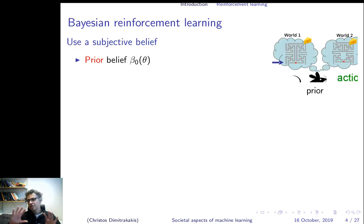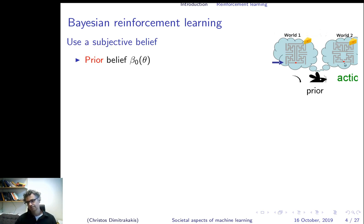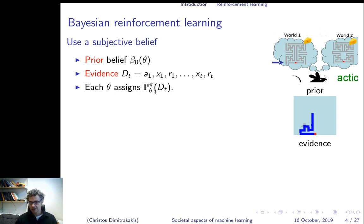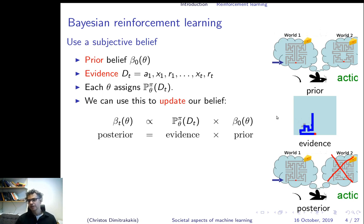One way to deal with this is to say there are many possible models of the world — let's say, in this example, two — and we assign a probability to each one of them. Let's call this the prior belief, beta_0: assigning a probability to every possible theta, every possible maze layout. Now we can act in the maze and obtain a sequence of actions, observations, and rewards — which we can call the evidence D_T. Each one of these models assigns a different probability to the same evidence. For the same policy and the same evidence, different thetas assign different probabilities. We can use this to update our belief. We can always do this because these are internal models of the world. We just need to multiply the prior probability of the world with the evidence probability to get the posterior.